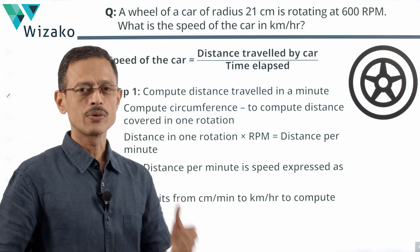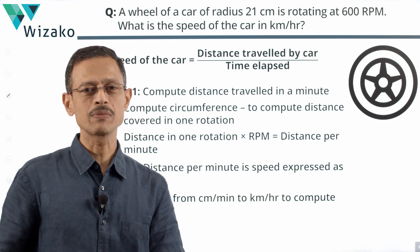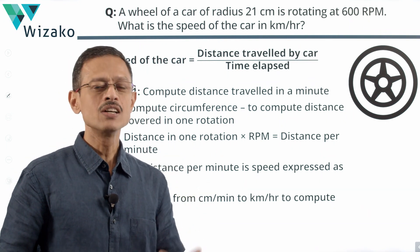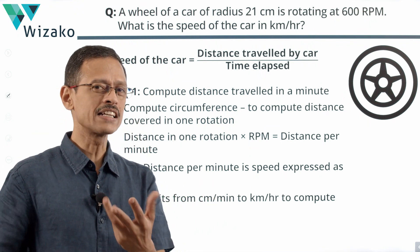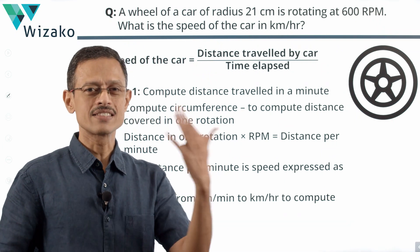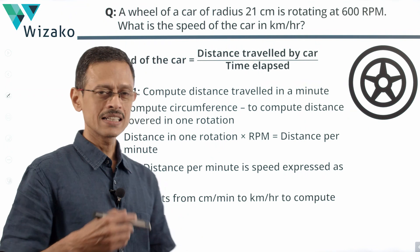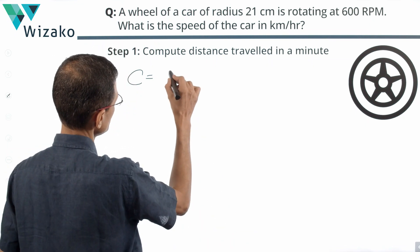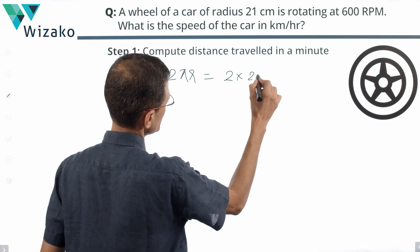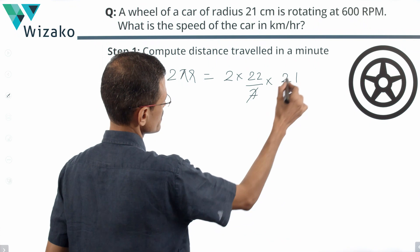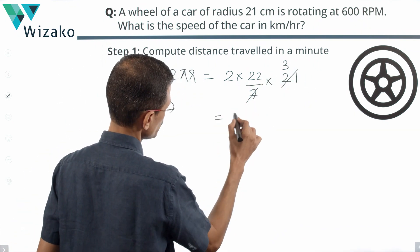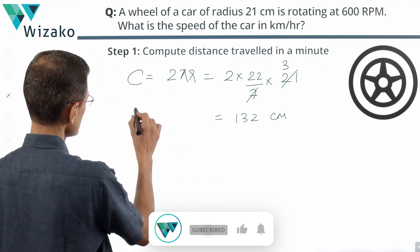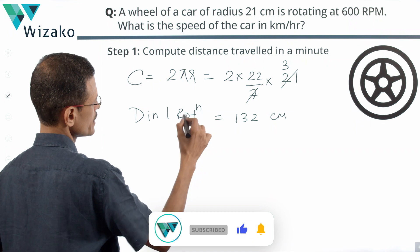Let's quickly run through it. We compute the circumference, which tells us the distance covered by the wheel in one rotation. Circumference of the wheel, which is a circle, is 2πr = 2 × (22/7) × 21. Cancel the 7 with 21 to leave us with 3. So 44 × 3 = 132 centimeters. This is the circumference — the distance traveled in one rotation. Distance in one rotation equals 132 centimeters.